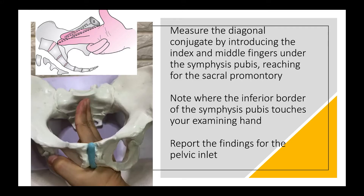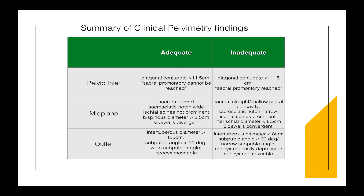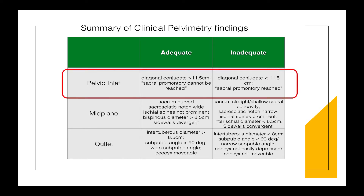Next we have to report the findings for the pelvic inlet. If the pelvic inlet is adequate, we report it as diagonal conjugate more than 11.5 centimeters, or sacral promontory cannot be reached. If the pelvic inlet is inadequate, we report it as diagonal conjugate less than 11.5 centimeters, or sacral promontory reached.